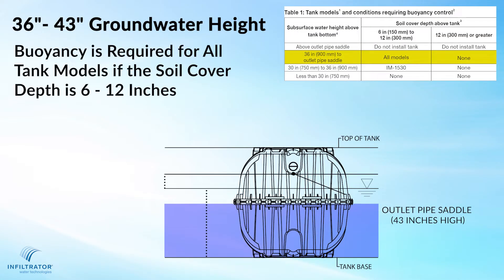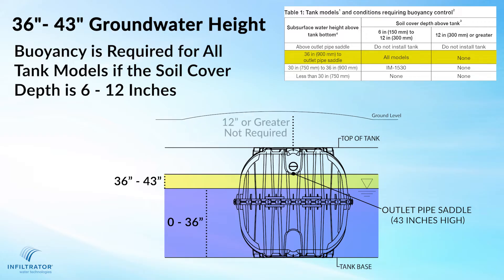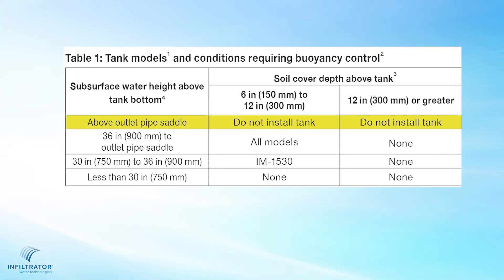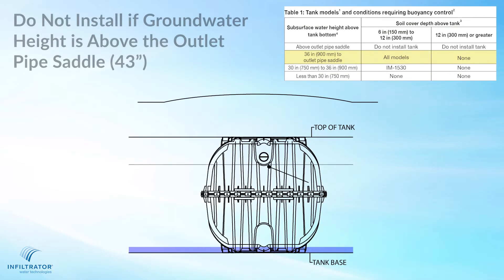With 12 inches or greater of soil cover depth above the top of the tank, no buoyancy control is required. With the subsurface water height above the outlet pipe saddle — so greater than 43 inches — do not install the Infiltrator septic tank.